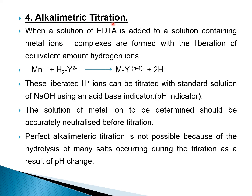The next method is alkalimetric titration. When a standard EDTA solution is added to a solution containing metal ions, complexes are formed with the liberation of an equivalent amount of hydrogen ions. These liberated H+ ions are then titrated with a standard sodium hydroxide solution using an acid-base indicator. The solution of metal ion to be determined must be accurately neutralized before titration. A perfect alkalimetric titration is not always possible due to hydrolysis of many salts during titration as the pH changes.